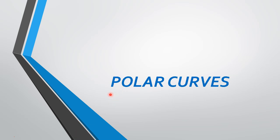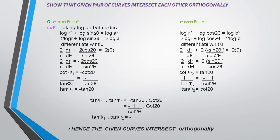Hello everyone, today we are going to see the chapter polar curves. In that, we are going to show that the given pairs of curves intersect each other orthogonally. The given curves are r² sin2θ = a²